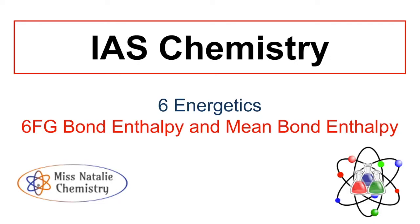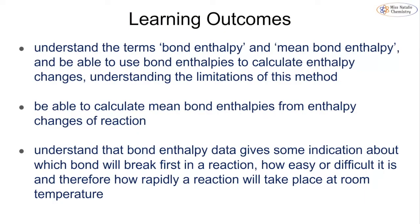This video is going to look at the last section of Topic 6, Energetics, in the IAS Edexcel Chemistry course. We're going to be looking at bond enthalpy and mean bond enthalpy — what these mean and how we can use them in calculations. We'll start with definitions and limitations, then use mean bond enthalpies to calculate enthalpy changes, and discuss how bond strength relates to how rapidly a reaction can take place at room temperature.